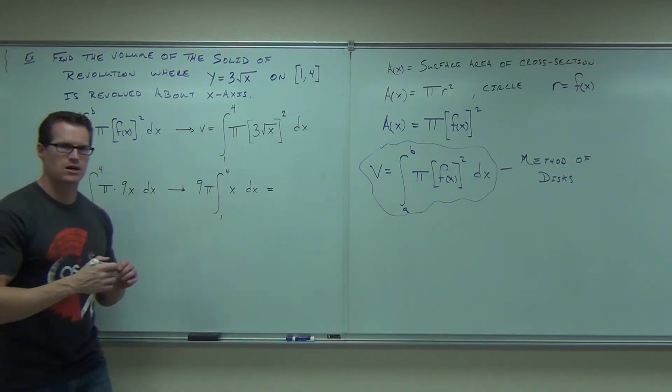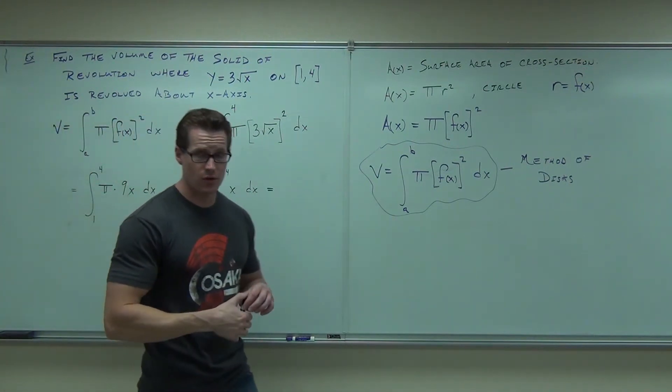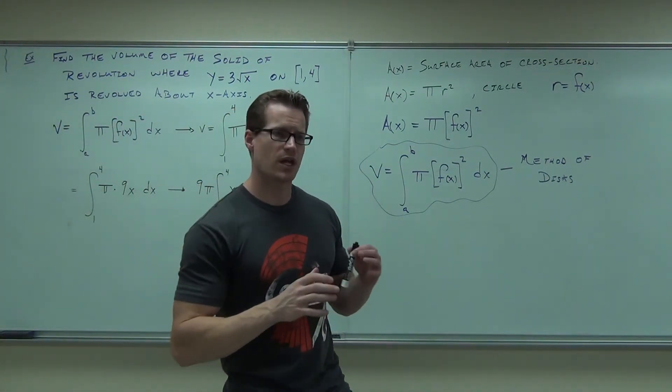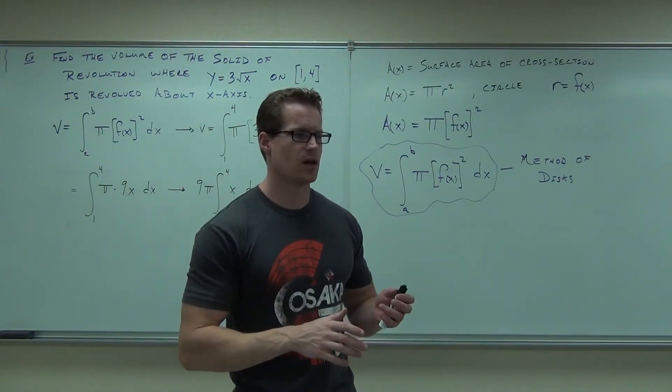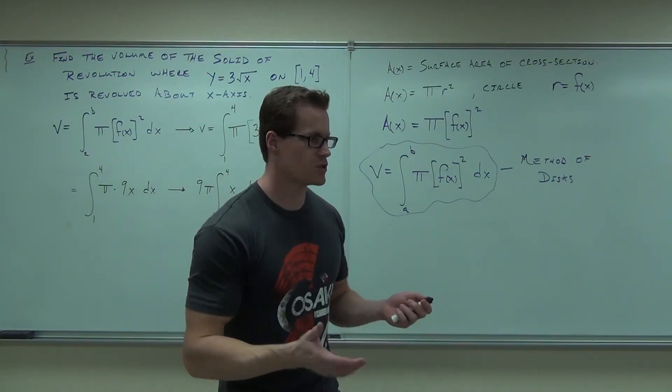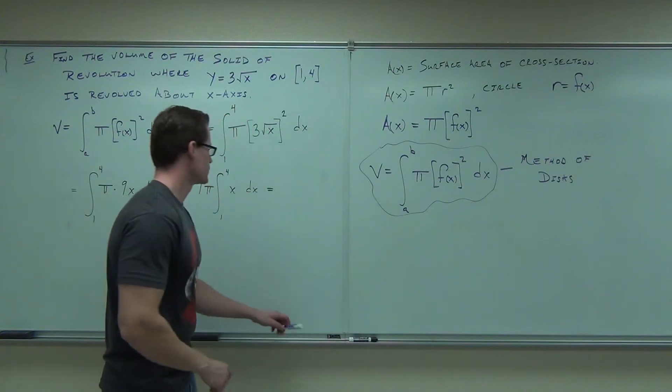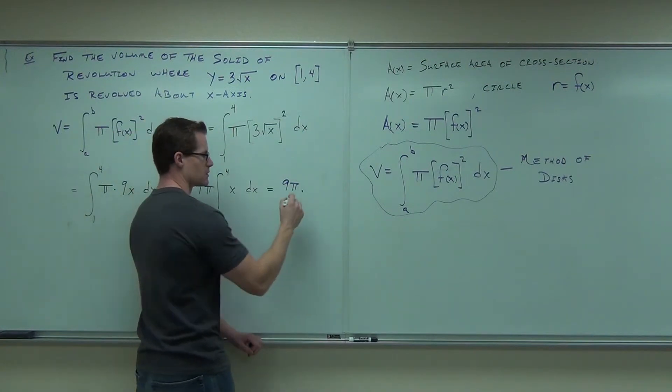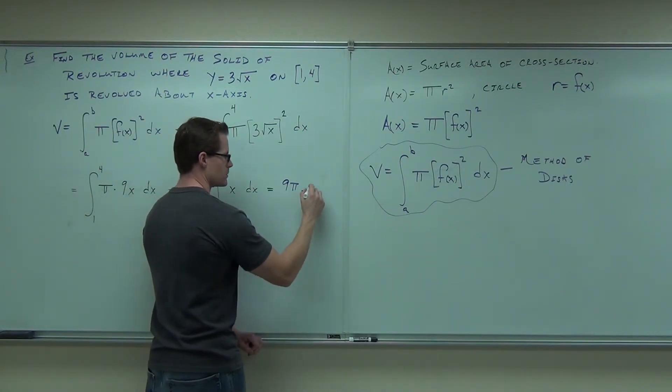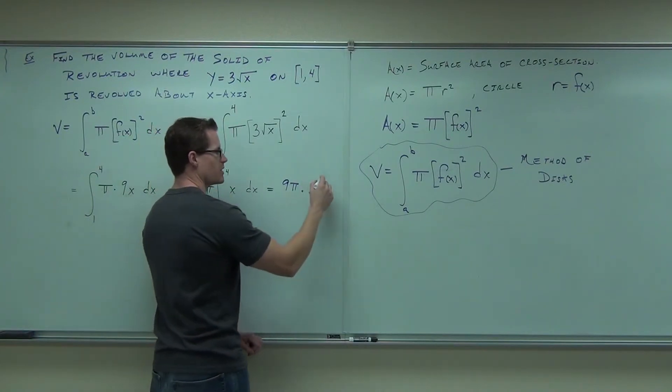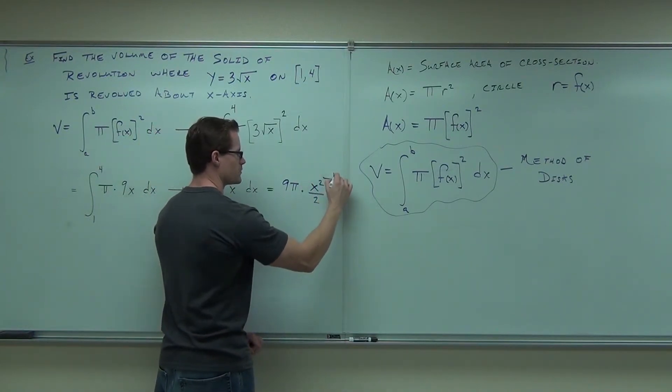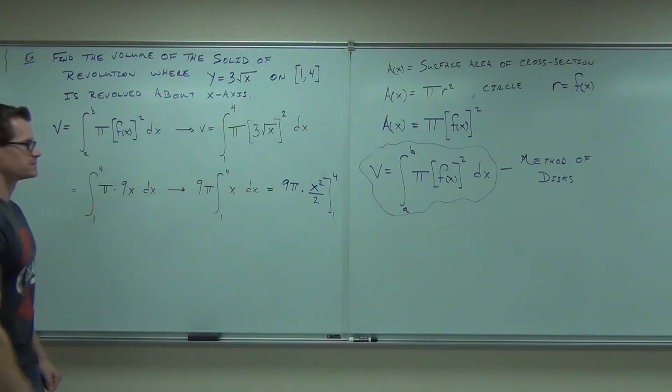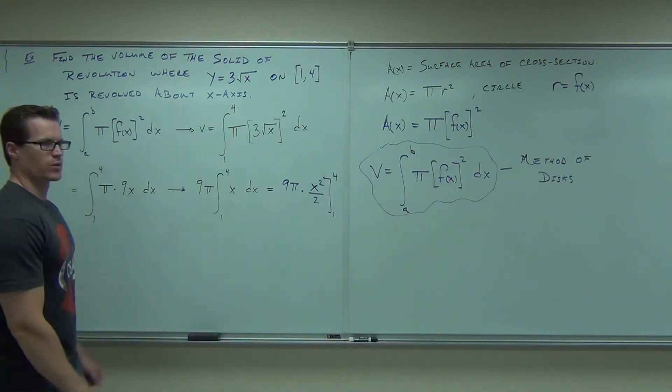From 1 to 4 of x dx. No substitution necessary. Nothing hard. Don't make these harder than they have to be. If you can do an integral without a substitution and it's fairly easy, do it. Okay, do that. Don't trick yourself on these problems. You're going to get 9π times what?